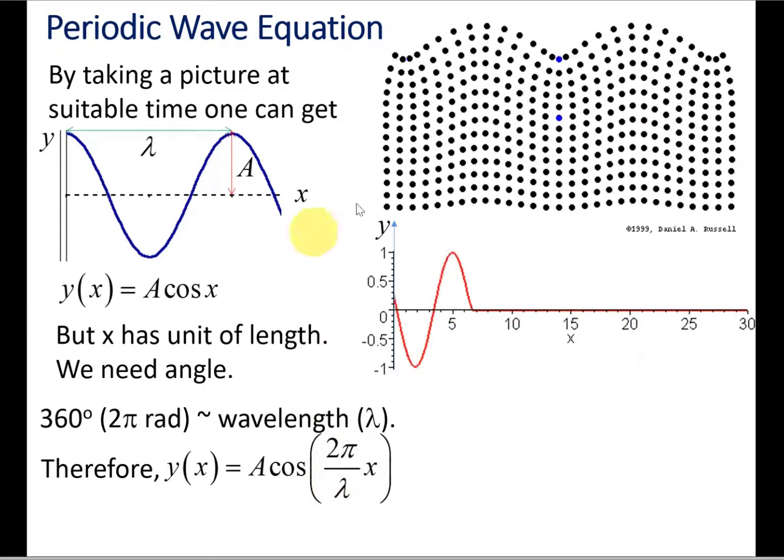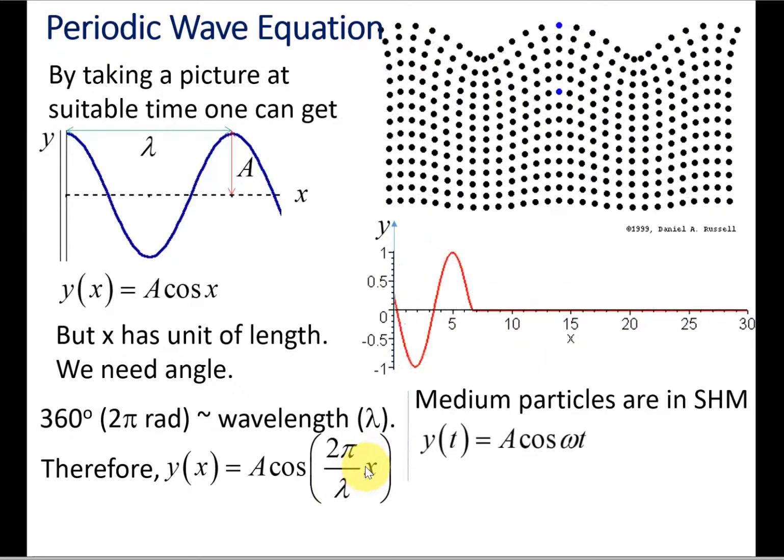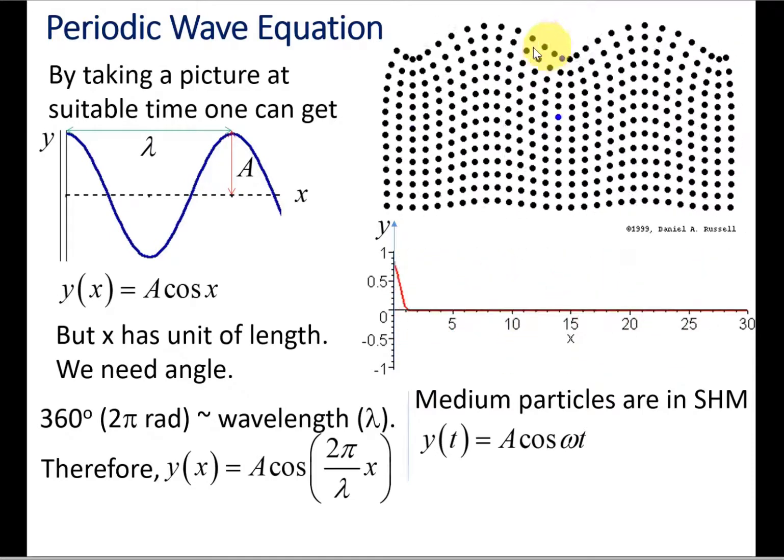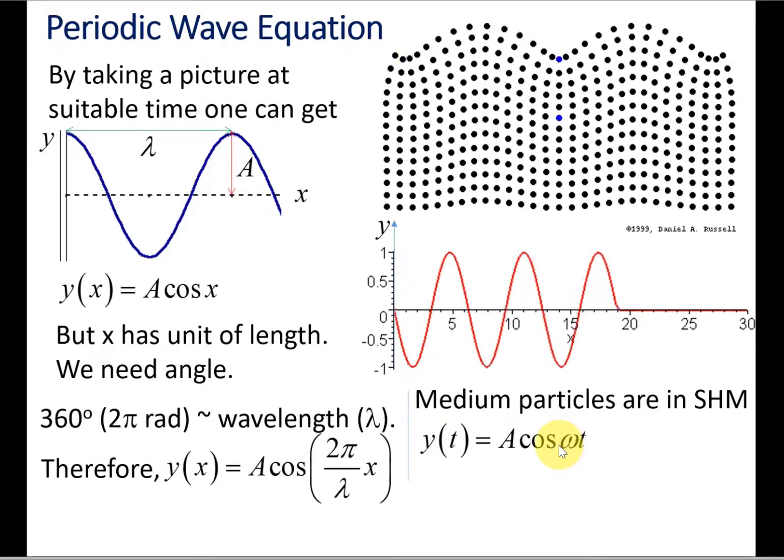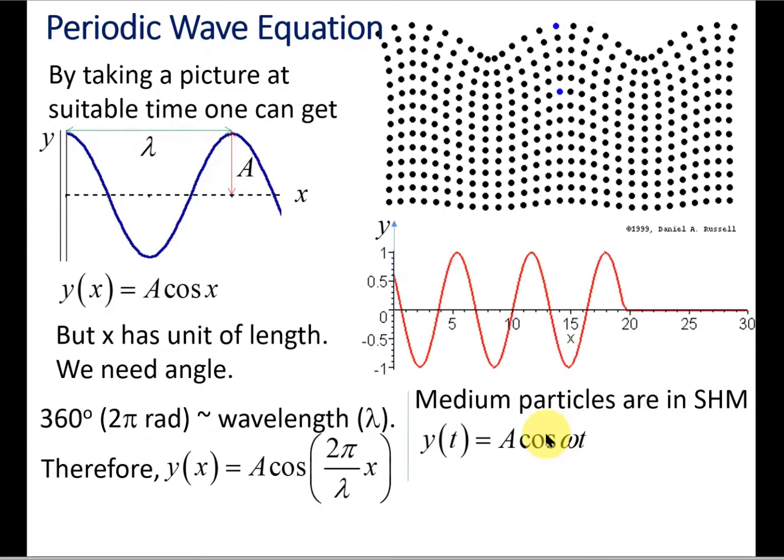Now if we were to just look at one point, one particle that's oscillating back and forth, that oscillation can also be written in the form of cosine, just like we looked at the oscillating pendulum or oscillating mass attached to a spring. It's the same idea, so we can write that in terms of cosine.